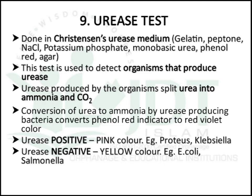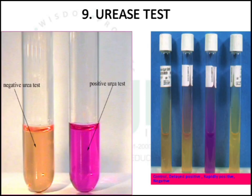The next test is the urease test, performed in Christensen urease media, which consists of gelatin, peptone, sodium chloride, potassium phosphate, urea, phenol red, and agar. This test detects organisms that produce urease. Urease splits urea into ammonia and carbon dioxide, converting the phenol red indicator to red-violet color. A urease-positive test gives pink color — examples: Proteus and Klebsiella. A urease-negative test gives yellow color — example: E. coli.